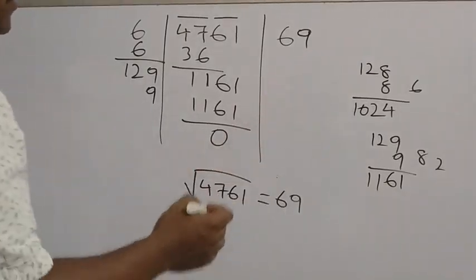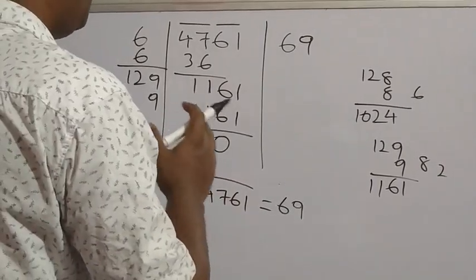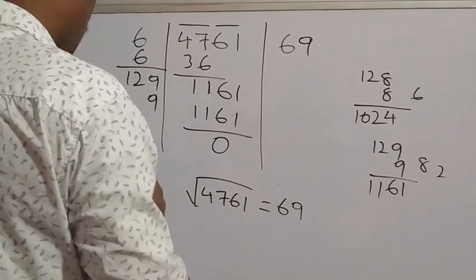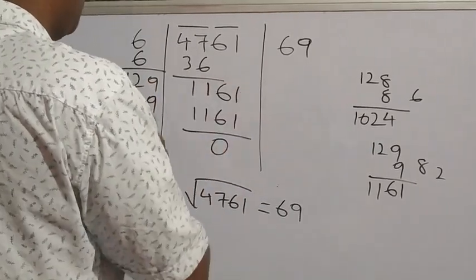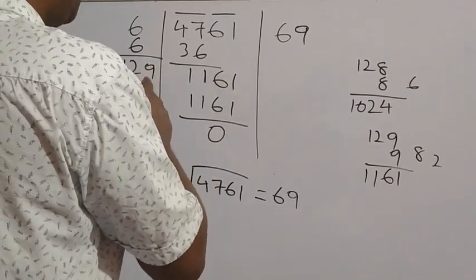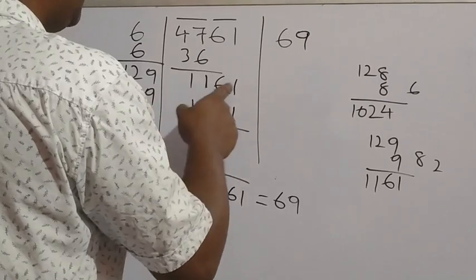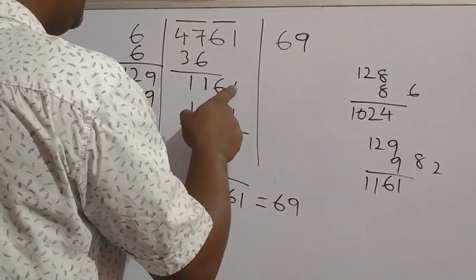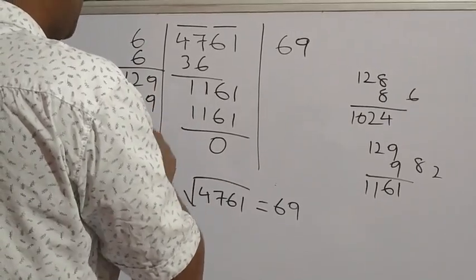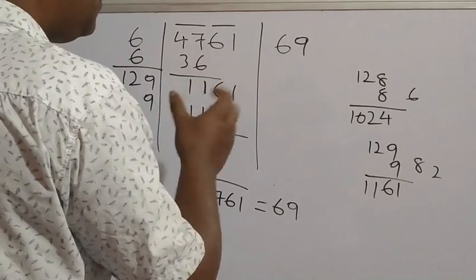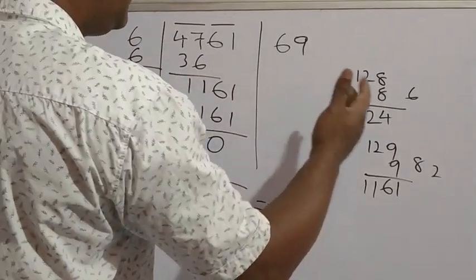Understood? I am multiplying 1 by 1 to show you, but directly also we can multiply if we have the idea. A hint: look at the unit digit. Here the unit digit is 1. So what will multiply to give unit digit 1? Check: 3 × 3 = 9 — not 1. 4 × 4 = 16 — unit digit 6, not 1. 5 × 5 = 25 — unit digit 5. 7 × 7 = 49 — unit digit 9. 9 × 9 = 81 — unit digit 1. So by thinking mentally and with more and more practice, you can directly put the number.